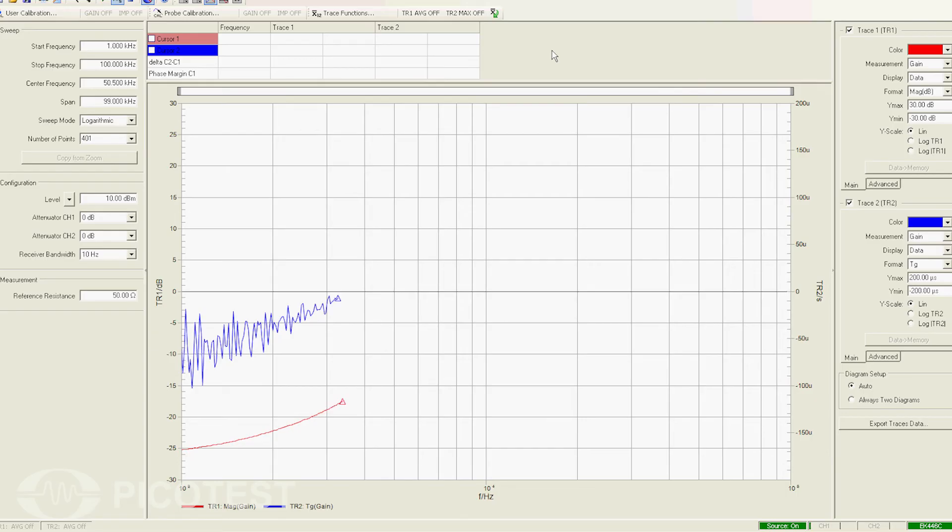Now let's replace the output capacitor with a 10 microfarad ceramic capacitor and perform the same measurement. We can see that the peak and group delay for this circuit is much steeper and higher in magnitude, indicating a much higher Q than before.